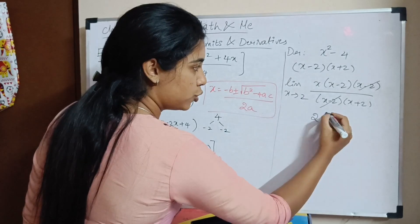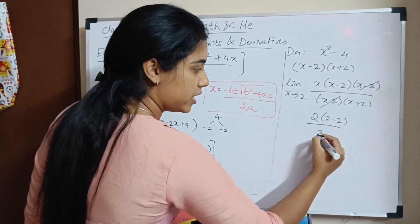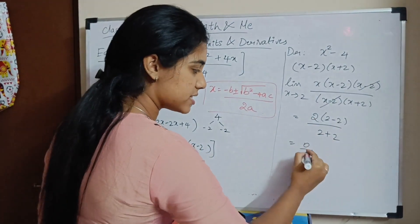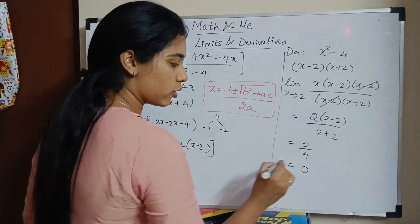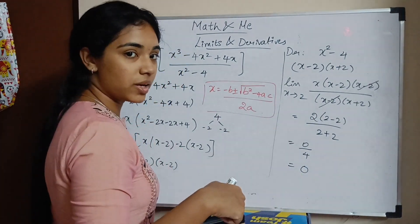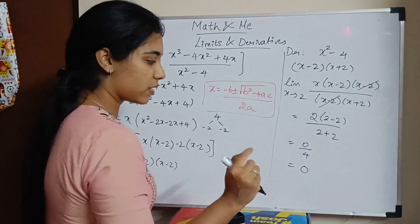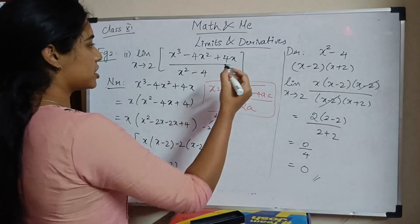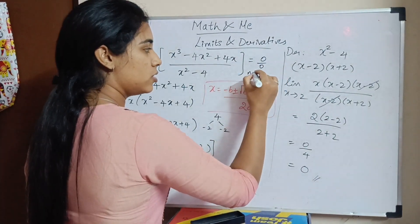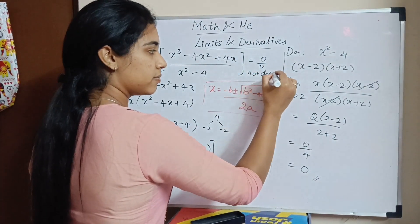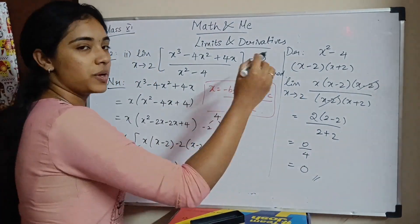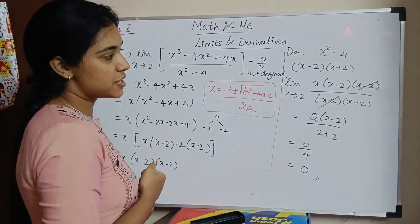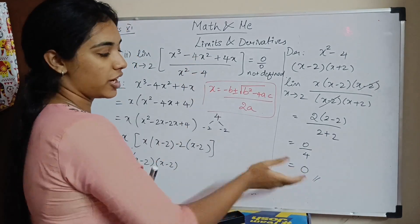What will you get? 2 times 2 minus 2 divided by 2 plus 2. What will you get? 2 into 0 is 0. So you get 0 by 4. 0 by any number is 0. We cannot have 0 by 0 or 1 by 0. Basically denominator should not be 0. So your numerator is 0. Now your final answer is 0. So how will you write the question? When you substitute, you get 0 by 0 not defined. And you try to split the middle term or do something else. After substitution at the end of that, you will be able to get your final answer.